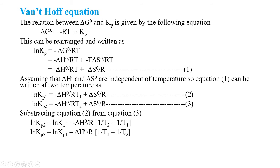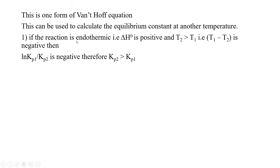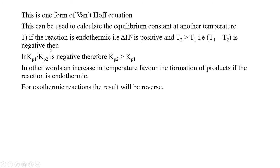By using the Van't Hoff equation we can calculate the equilibrium constant at another temperature. Suppose the reaction is endothermic — delta H naught is positive — and T2 is greater than T1, so T1 minus T2 is negative. In such a case, ln(Kp1/Kp2) is negative, therefore Kp2 is greater than Kp1. An increase in temperature favours the formation of products if the reaction is endothermic. For an exothermic reaction, the result will be reversed.